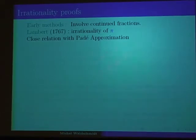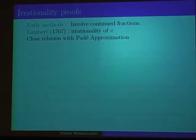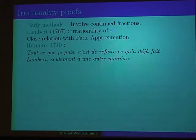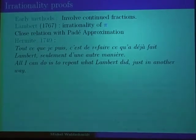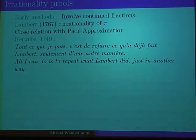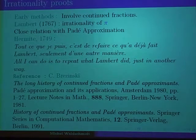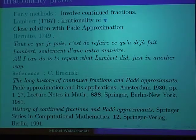I mentioned in the previous lectures that the first irrationality results were proved using continued fractions, and this was the way the irrationality of π was proved by Lambert in 1767. To see the analogy between Lambert's work and Hermite's, the best approach is to recall what Hermite said in a letter: "All I can do is to repeat what Lambert did, just in another way." It's interesting to see how Hermite relates his own work to Lambert's, which did not explicitly involve the analytic formulas of Hermite. You will find more information in two papers by Brezinski — one published in lecture notes and the other a book on the history of continued fractions.